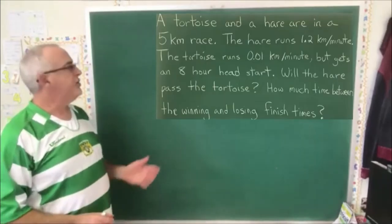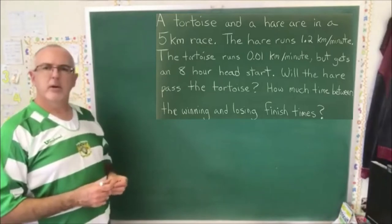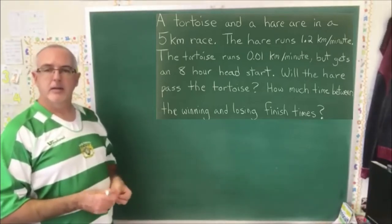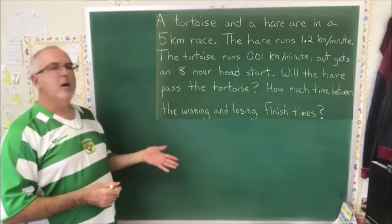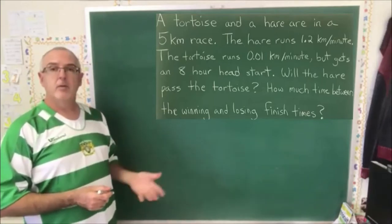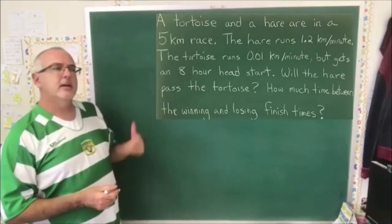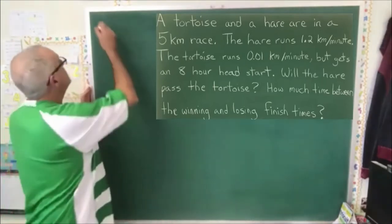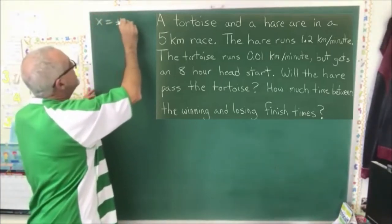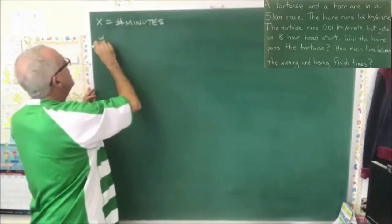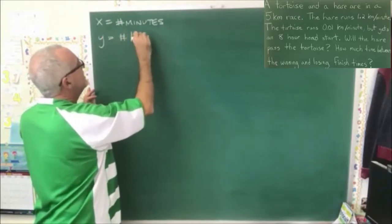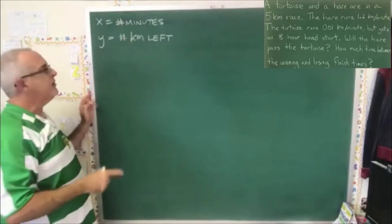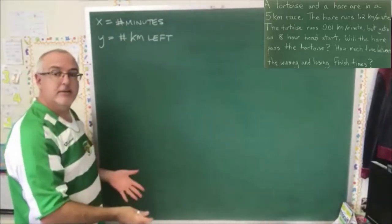We have our tortoise and hare race question. The hare is traveling 1.2 kilometers per minute, and the tortoise is traveling at 0.01 kilometers per minute. They're running a 5k race and the tortoise has an 8-hour head start. I'm proceeding to use straight lines math to solve this because I see the kilometers per minute unit — a unit slash unit tells me that sounds like a slope. I'm defining my variables: x equals number of minutes, y equals number of kilometers left.